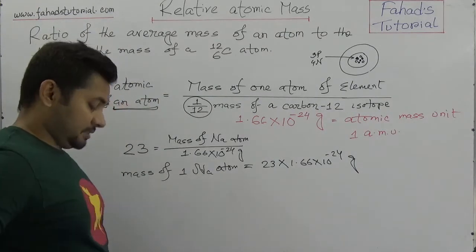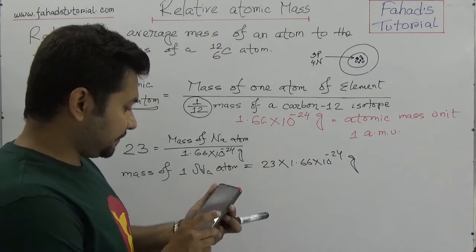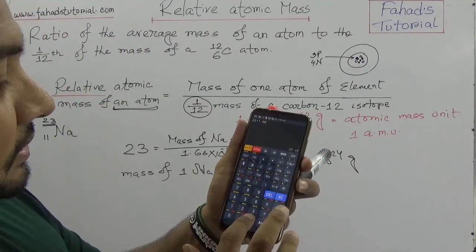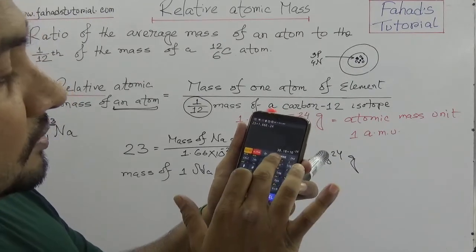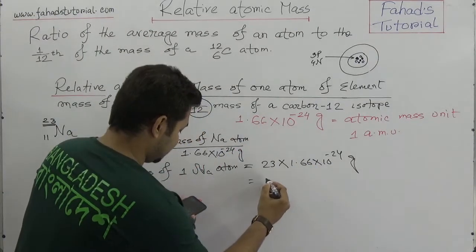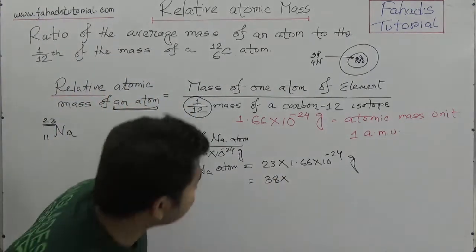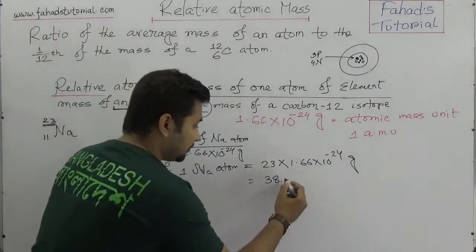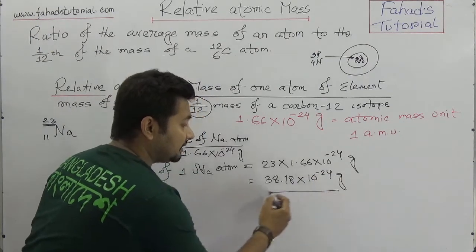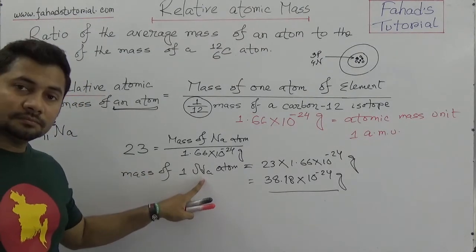If you need to find out the mass of one sodium atom, we need to multiply 23 times 1.66 × 10⁻²⁴ grams. Using a calculator: 23 × 1.66 × 10⁻²⁴ = 38.18 × 10⁻²⁴ grams. That is the mass of one sodium atom.